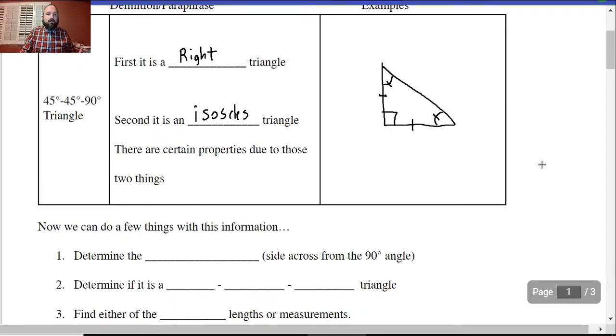Let's go on. First, we can determine the hypotenuse. This is going to be the side across from the 90 degree angle. You know, we have to determine what type of special triangle. Is it a 45 degree, 45 degree, 90 degree triangle or a 45-45-90 triangle.